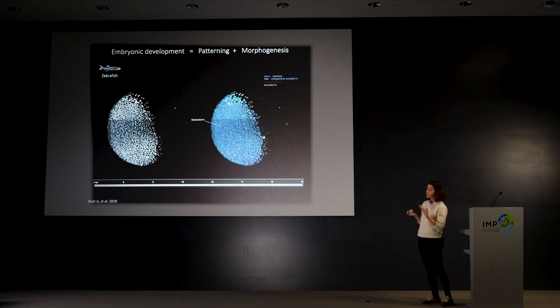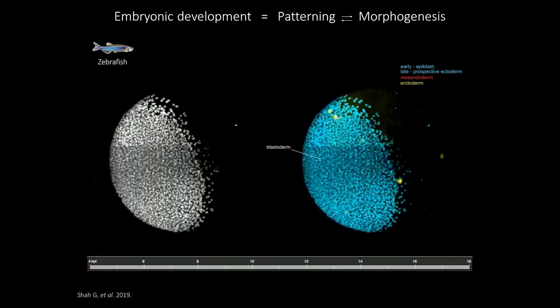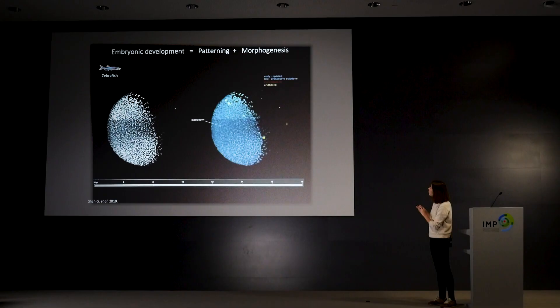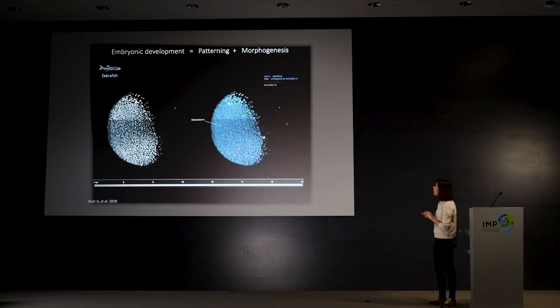Here I'm showing an example of a zebrafish embryo starting at four hours post fertilization. On the left you can see all the cell nuclei in gray and on the right hand side the same nuclei are color coded according to the tissues they will give rise to — in blue we have ectoderm, in red mesoderm, and in green endoderm.